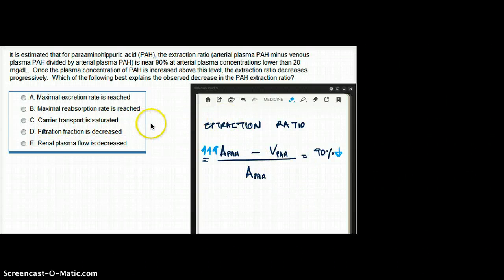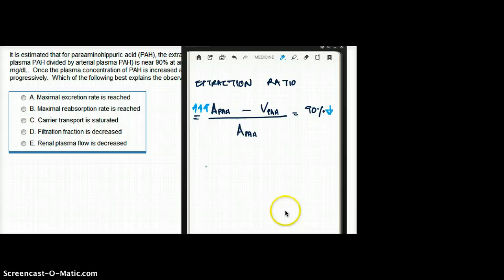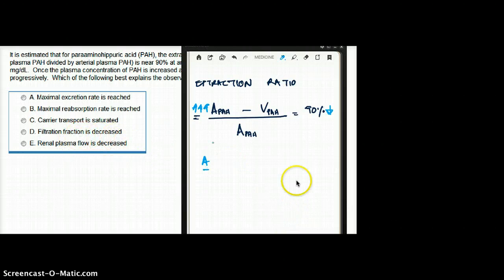Let's see. A, maximal excretion rate is reached? Yes, it could be true. The maximal excretion rate is reached, but they did not break it down, but it could be a potential answer. B, maximal reabsorption rate is reached? None of the PAH is reabsorbed. We talked about that. Carrier transport is saturated? That's bingo. That's even better than answer choice A.